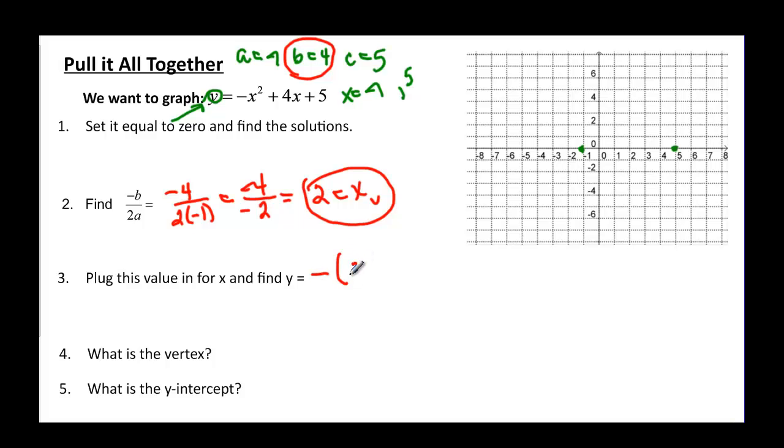Plug that value in and find y. So, negative the opposite of 2 squared plus 4 times my 2 plus 5. This is the opposite of 4. 4 times 2 is 8 plus 5. Negative 4 plus 8 would be positive 4 plus 5 will give me 9. And that's my y. So, my vertex then is 2 in the x, 9 in the y. So, 2, 6, 7, 8, 9 is going to be somewhere down here.